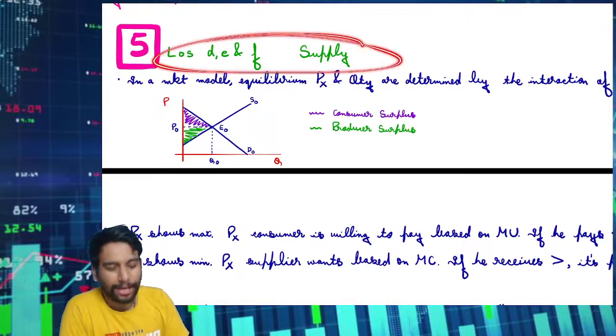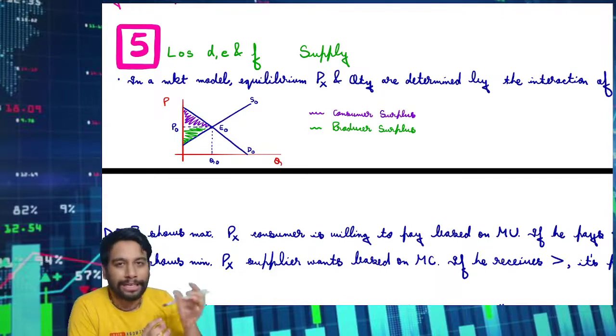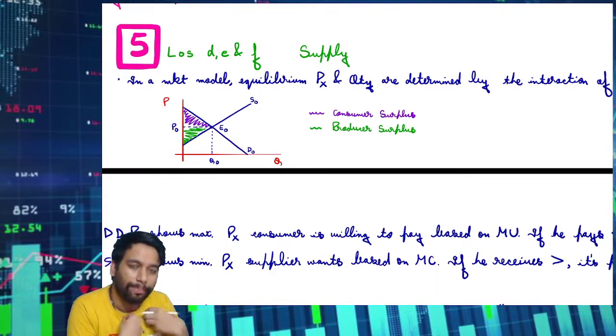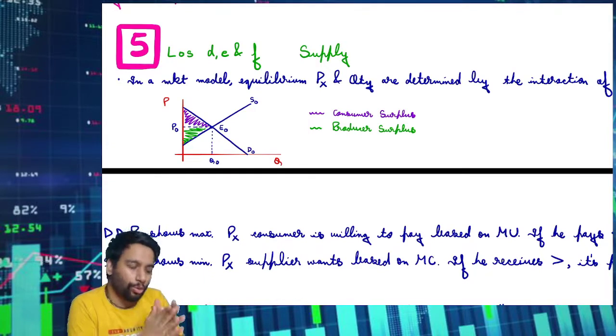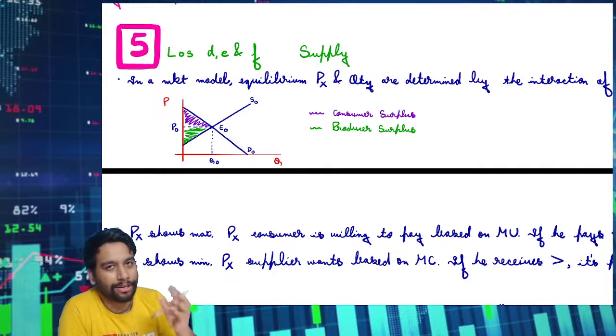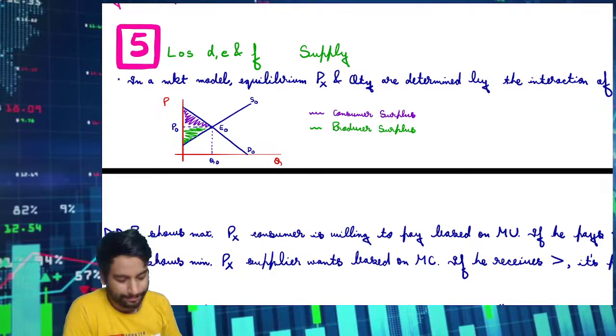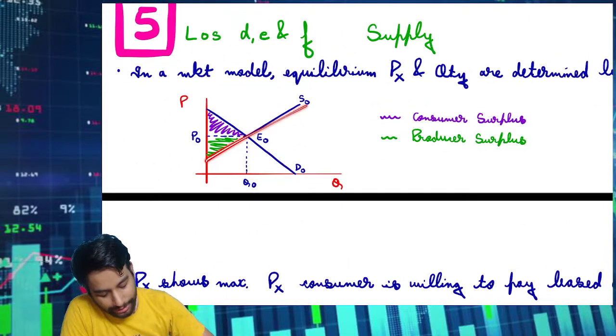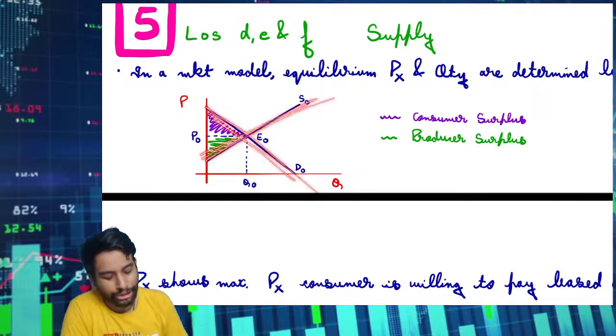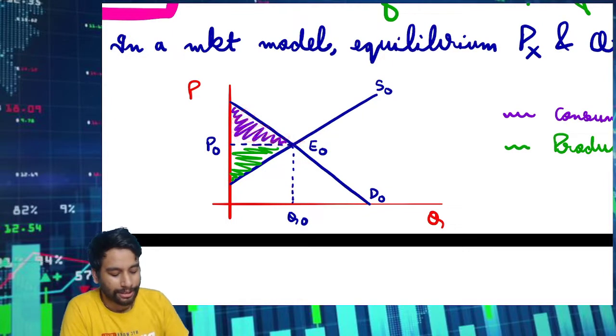The next concept is supply, which is opposite of demand. Supply, quantity supplied, and supply - what is the difference?